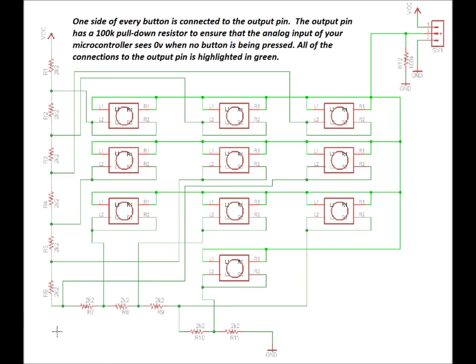And again, we've got a 100k ohm pull down resistor connected to the primary side of every single button on our keypad. Now the pull down resistor is so that when no button is being pressed we see zero volts on that secondary side, which is fed to the analog to digital input of your microcontroller.